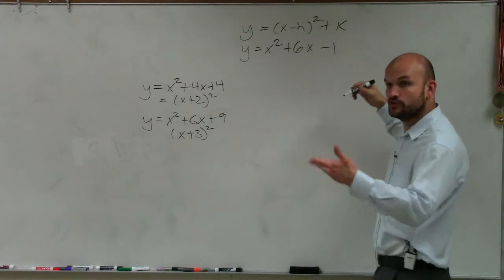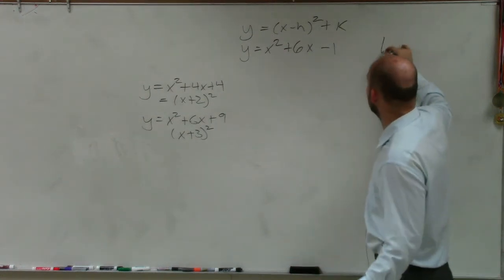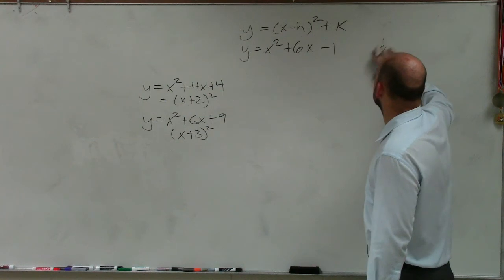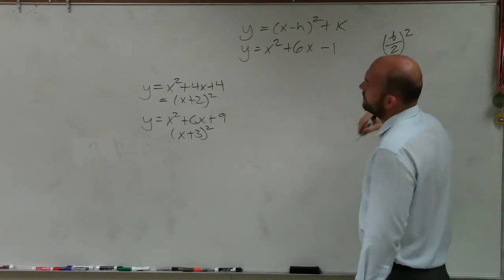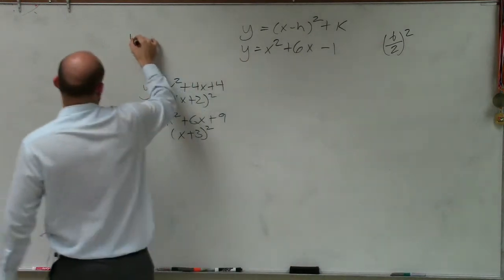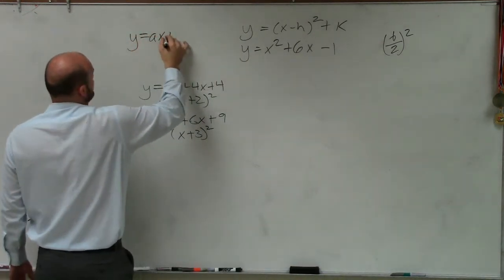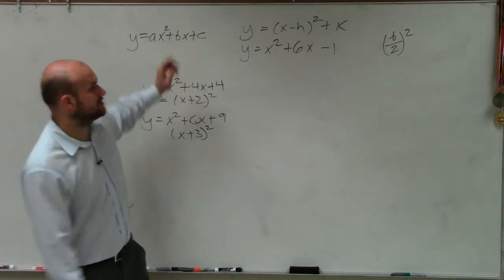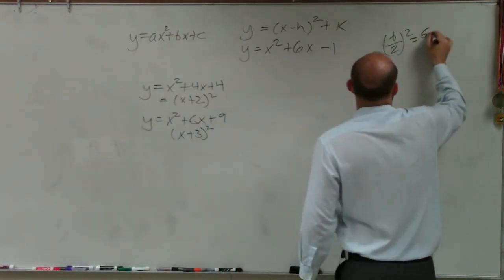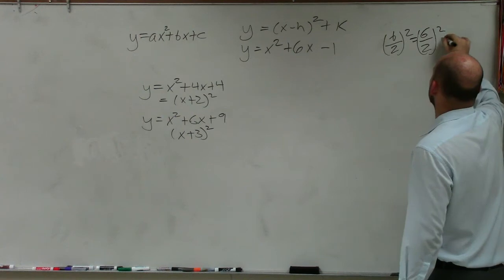The next step is to create that perfect square. So to do that, we take our b divided by 2 and square it. Now you might say again, well, what was my b? Well, if we look back at standard form, that's going to be my coefficient. So therefore, I'll take 6 divided by 2, square it, which equals 9.